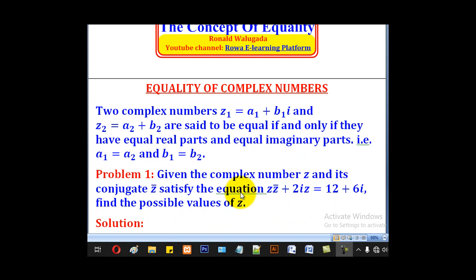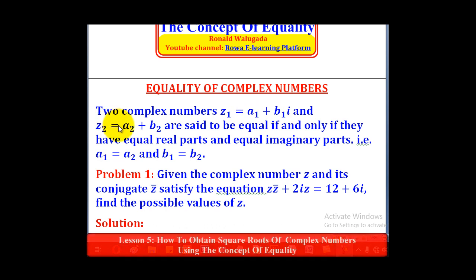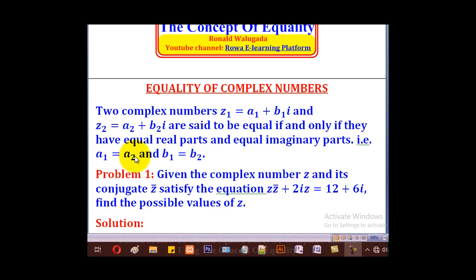So equality of complex numbers: if Z1 equals A1 plus B1i and Z2 equals A2 plus B2i, and they are equal, it implies that their real parts are equal, so A1 will be equal to A2, and their imaginary parts are equal, so B1 will be equal to B2.